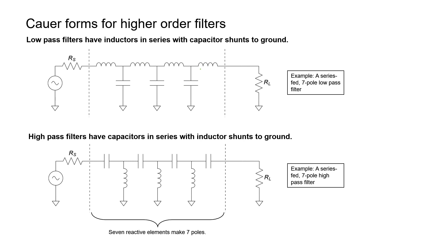For high-pass filters, we use a capacitor in the series position and an inductor in the shunt position — it works opposite to the low-pass filter. High frequencies have no trouble getting across the capacitors, and they're blocked from being shunted to ground by the inductors. Low frequencies, on the other hand, are blocked by the capacitors and shunted to ground by the inductors — blocked, shunted, blocked, shunted. So this is a series-fed seven-pole high-pass filter.